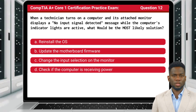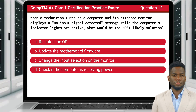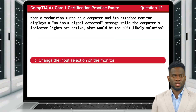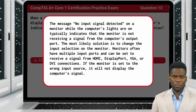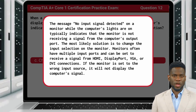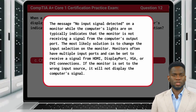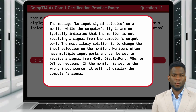Question 12. When a technician turns on a computer and its attached monitor displays a 'no input signal detected' message while the computer's indicator lights are active, what would be the most likely solution? The answer is C: change the input selection on the monitor. This message typically indicates that the monitor is not receiving a signal from the computer's output port. Monitors often have multiple input ports and can be set to receive a signal from HDMI, DisplayPort, VGA, or DVI connections. If the monitor is set to the wrong input source, it will not display the computer's signal.